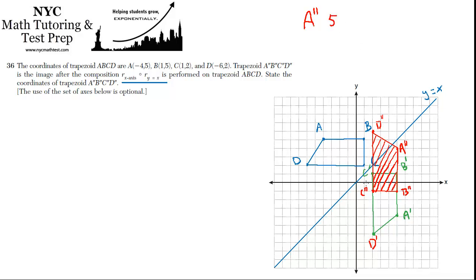Is that right? 1, 2, 3, 4, 5, and up 4. Yeah. B double prime is located at 5, negative 1. C double prime is located at 2, negative 1. D double prime is located at 2, 6.